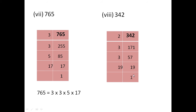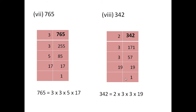So, we will take 19 once as 19. Write all the prime factors in product form: 342 is 2 multiplied by 3 multiplied by 3 multiplied by 19.